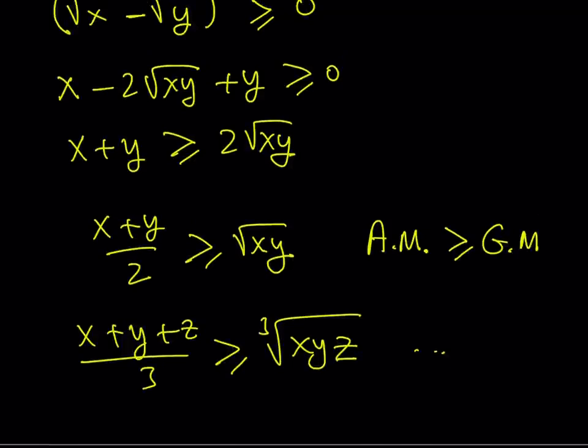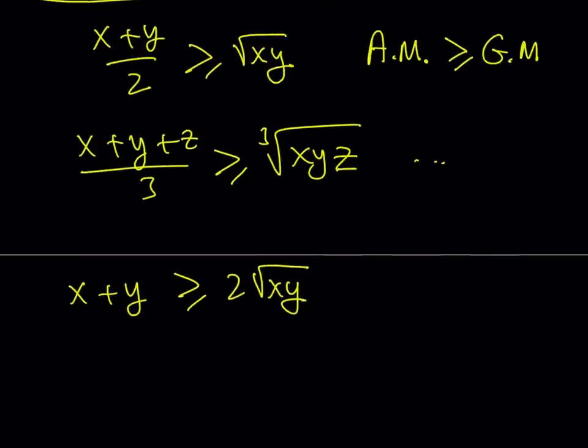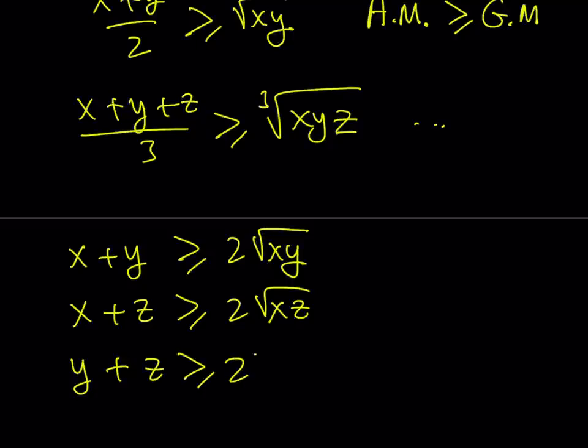Let's go ahead and come back to this and see how we can use it. So I do know that x plus y is greater than or equal to 2 times the square root of xy, if x and y are non-negative real numbers. And of course, I can do the same thing with x and z and then y and z.